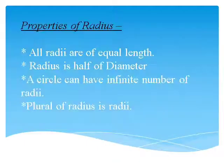Now let us learn about the properties of radius. All radii are of equal length. Radius is always half of diameter. A circle can have infinite number of radii. By infinite, I mean uncountable number of radii. And the plural of radius is radii.